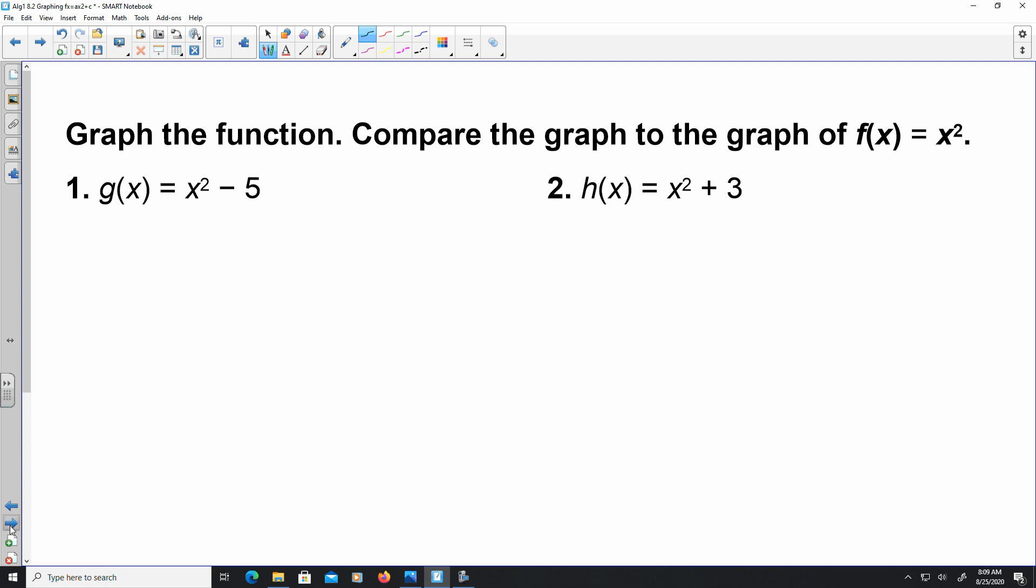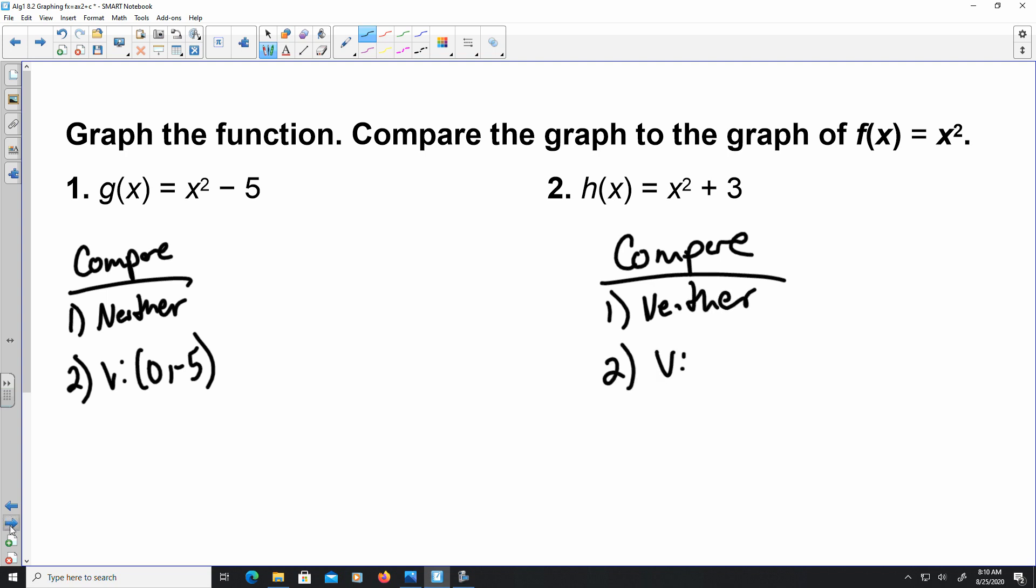Here, when it comes to comparing, this one is neither because a is one. And for the second part, my vertex is located at (0, -5) because c is -5. I'm not going to go into the graphs. If you need to see the graphs, please comment down below. I'm more than happy to do it later. But for right now, comparing this one, number two, this one is also neither because a is one. And my vertex is going to be located at (0, 3), or we could say the vertex moves three units up.